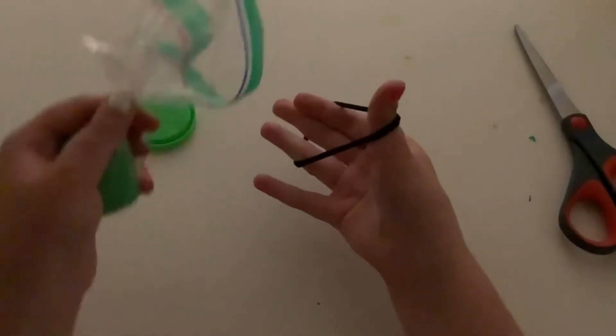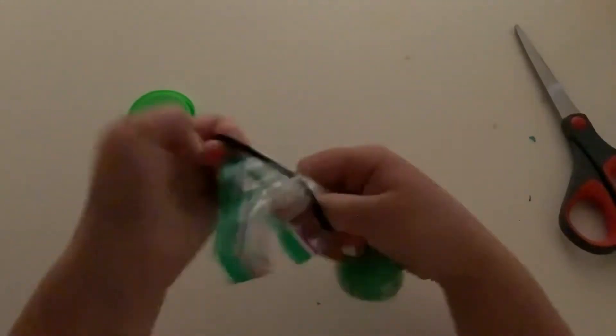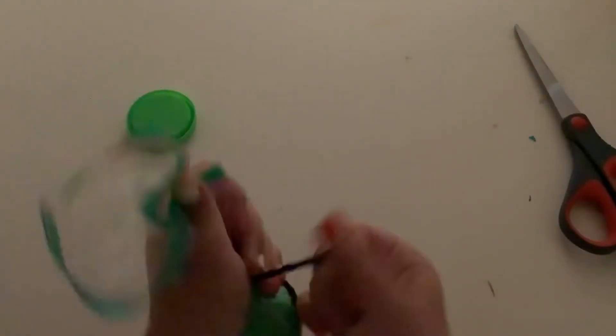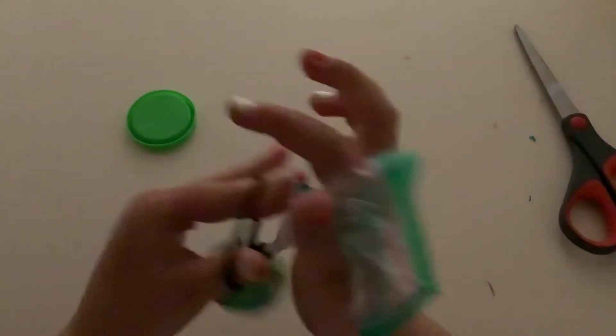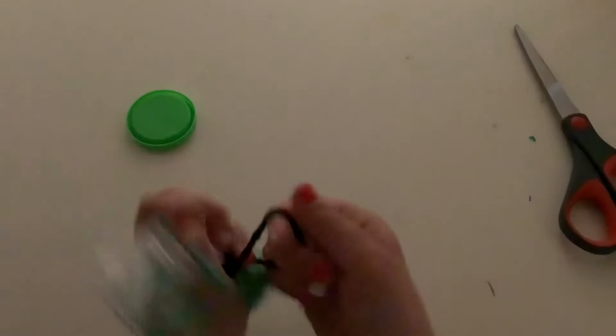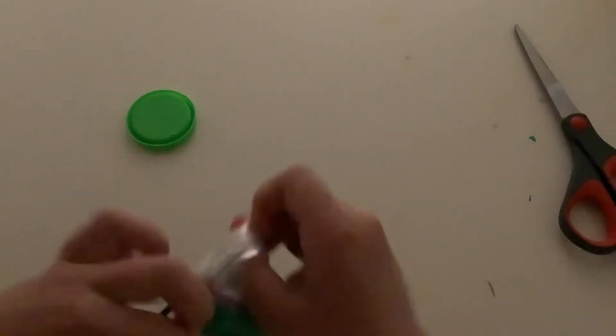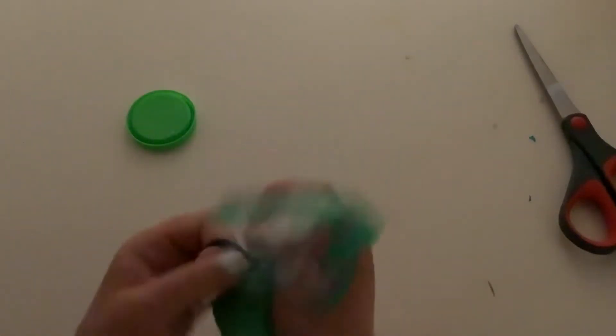And then you're going to take your rubber band and wrap it around just like this, if you were to make a ponytail.